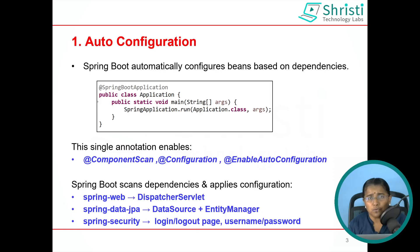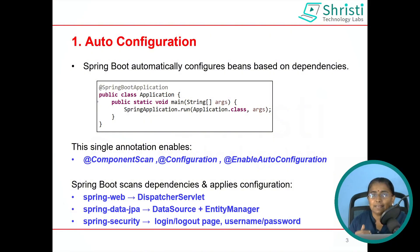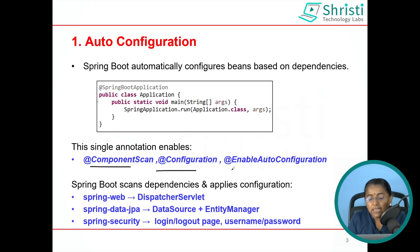The first feature is auto configuration. This is the main and important feature for which we have moved on to Spring Boot. Spring Boot auto configures the beans based on the dependencies that you have added. The main class in any Spring Boot application is annotated with the @SpringBootApplication annotation, which is a combination of @ComponentScan, @Configuration, and @EnableAutoConfiguration. The @EnableAutoConfiguration annotation is responsible for configuring the beans based on the dependencies.